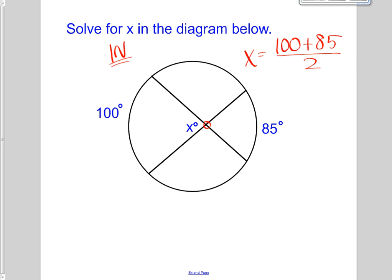So then you're just going to have, you know, we simplify that. That's 185 divided by two, which is 92.5.